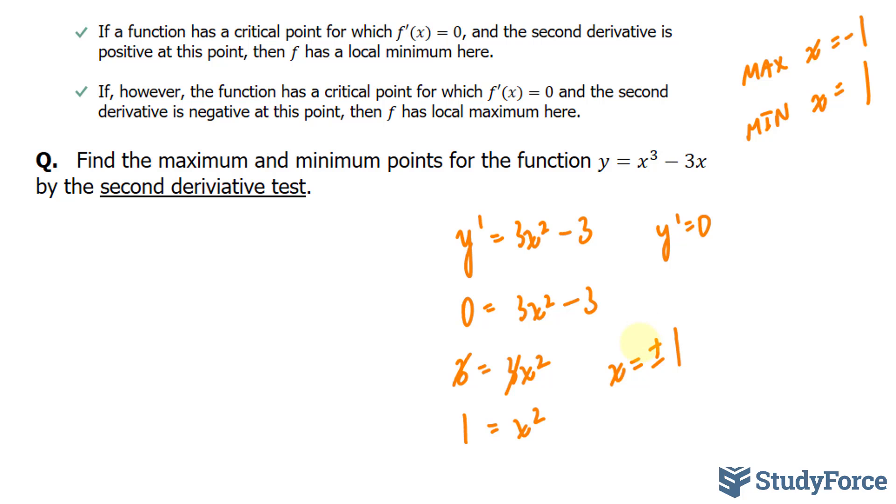Now we'll take plus minus 1 and input them in the second derivative, which we'll denote as y double prime. Taking the derivative of this term now, we end up with 6x, and the derivative of negative 3 is zero.